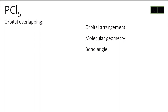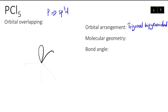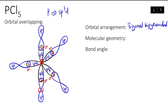Now we are going to show the orbital overlapping for phosphorus. We know it is sp3d, so I'm going to show the phosphorus sp3d orbital arrangement as trigonal bipyramidal. This is for phosphorus — place the P symbol in the center. Now we show the orbital overlapping between phosphorus and chlorine. Chlorine in the ground state uses the 3p orbital — so we have a dumbbell shape for each of the five sp3d hybrid orbitals — and they will overlap together.